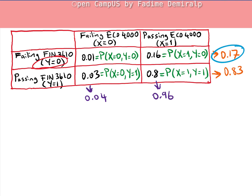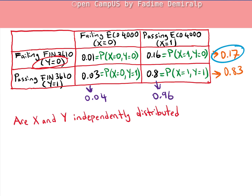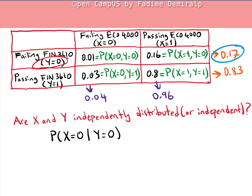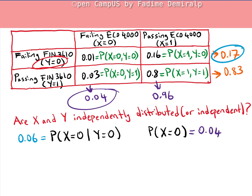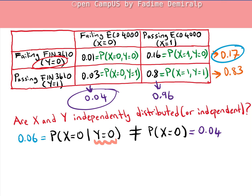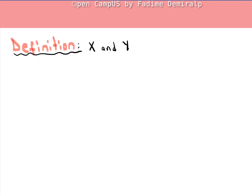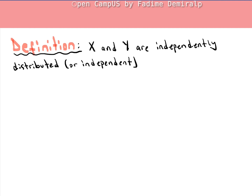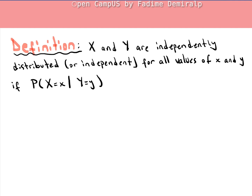Now we can assess whether X and Y are independently distributed. We found P(X = 0 | Y = 0) = 0.06, but the marginal probability P(X = 0) = 0.04. The probability of failing ECO4000 increased from 0.04 to 0.06 when conditioned on failing Finance 3610—the conditional probability is not equal to the marginal probability. Knowing the outcome of Y provides information about X, indicating X and Y are not independent. Two random variables are independent if and only if the conditional distribution of X given Y equals the marginal distribution of X for all values.